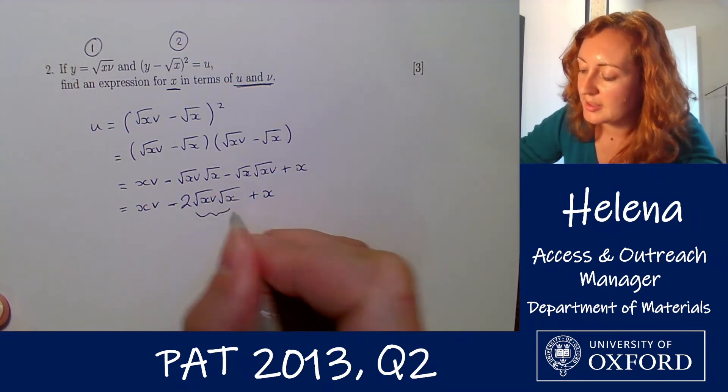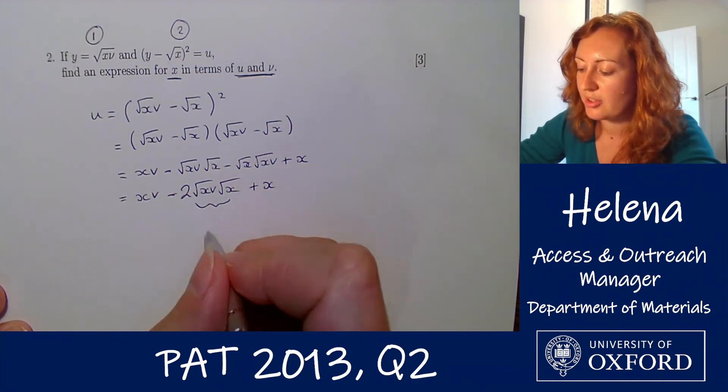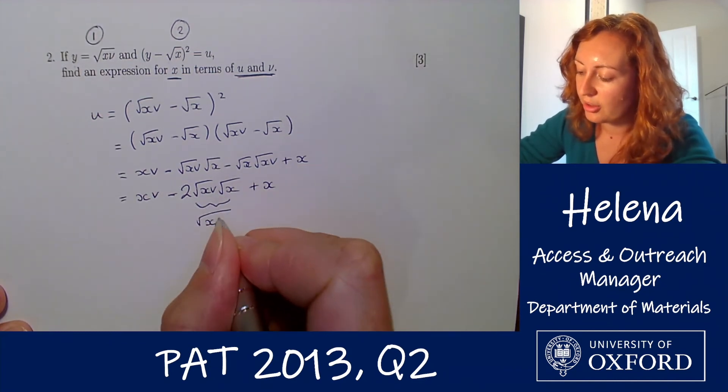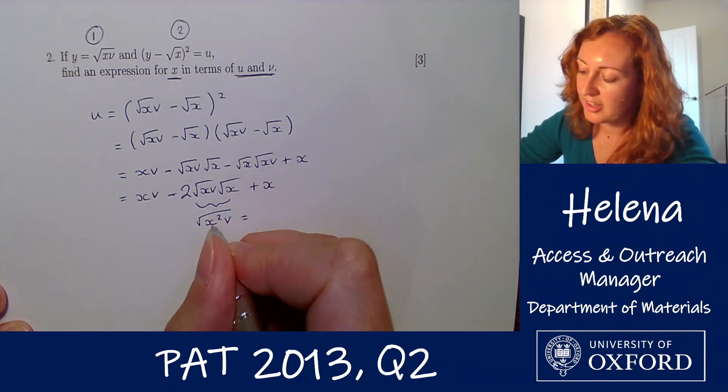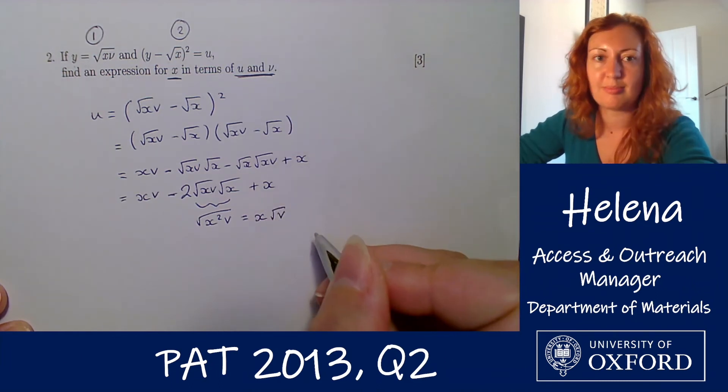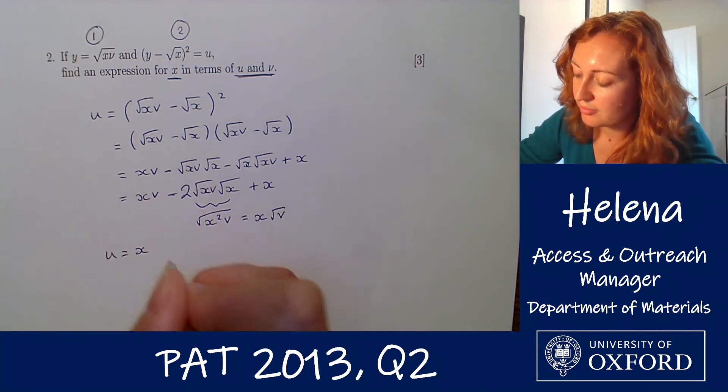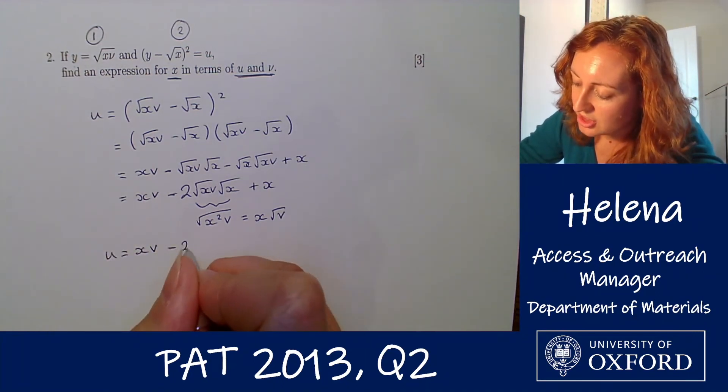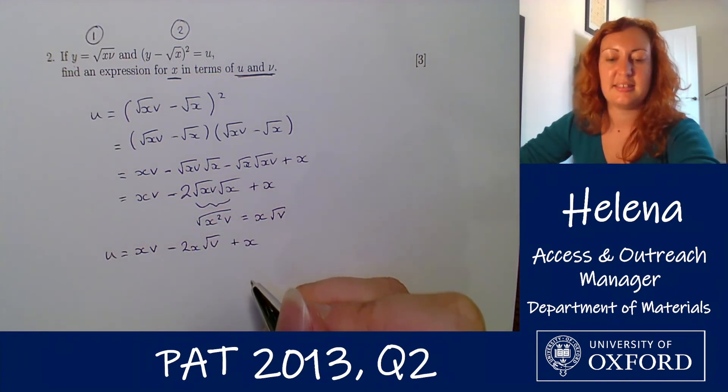Now we can simplify this a bit more. If you remember the rules, if we're multiplying two square roots we can combine it all under one. So we have x squared v here when we can factorize this x squared outside of the square root sign. So we have x root v here. So this whole expression for u is x v minus two x root v plus x here.